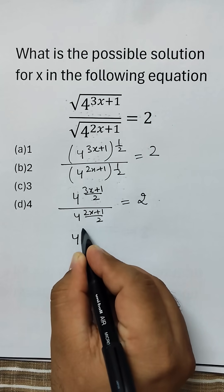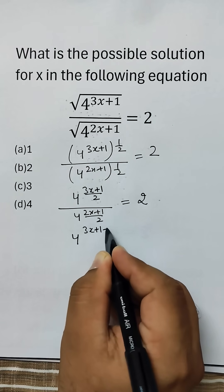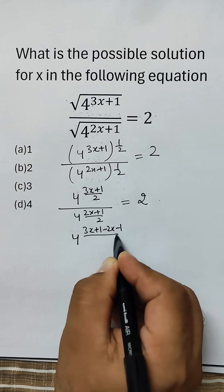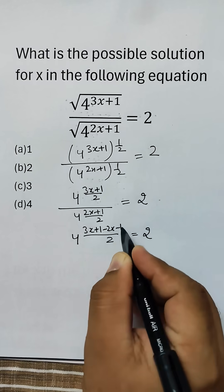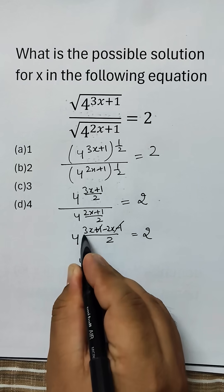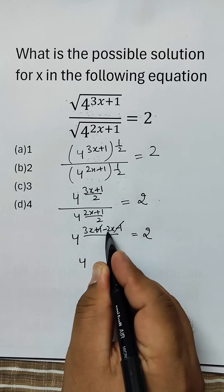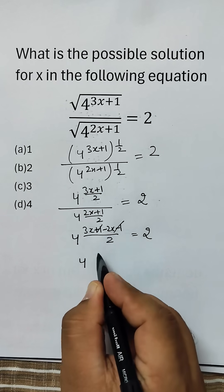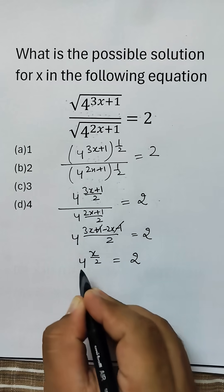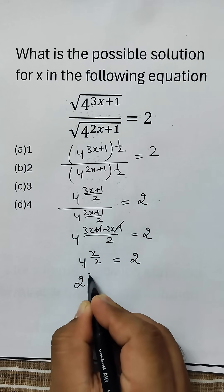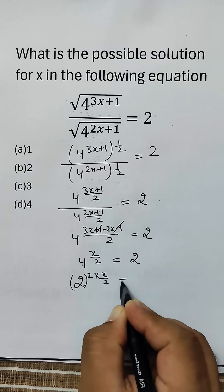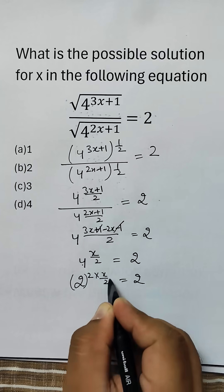Further, 4 power (3x + 1/2 minus 2x minus 1/2) is equal to 2. This cancels and we are left with 4 power (3x minus 2x), which is x by 2, is equal to 2. Now 4 can be written as 2 power 2, so 2 power 2 into x by 2 is equal to 2.